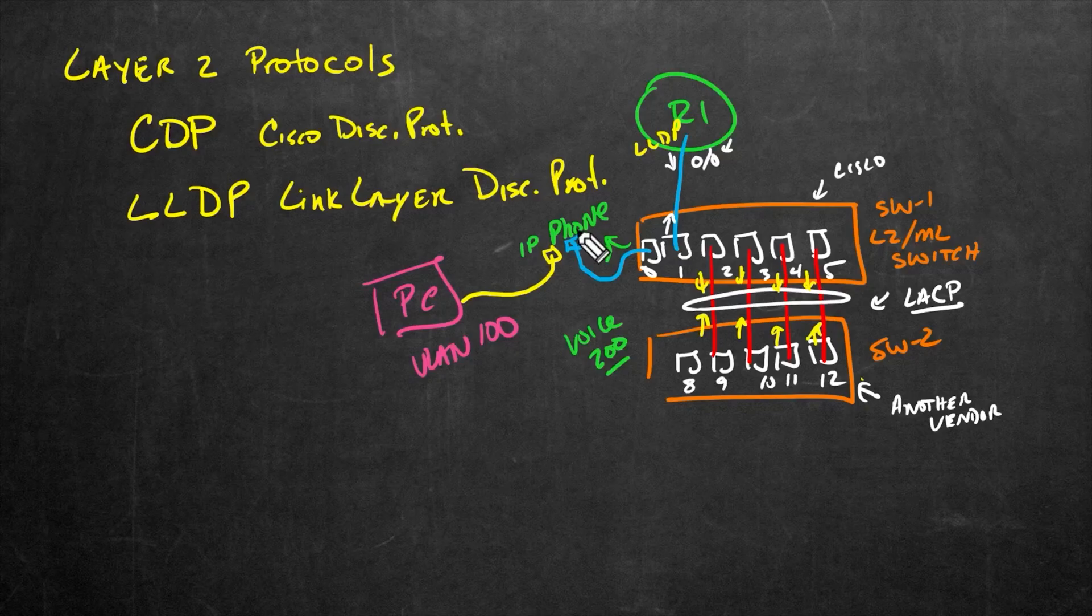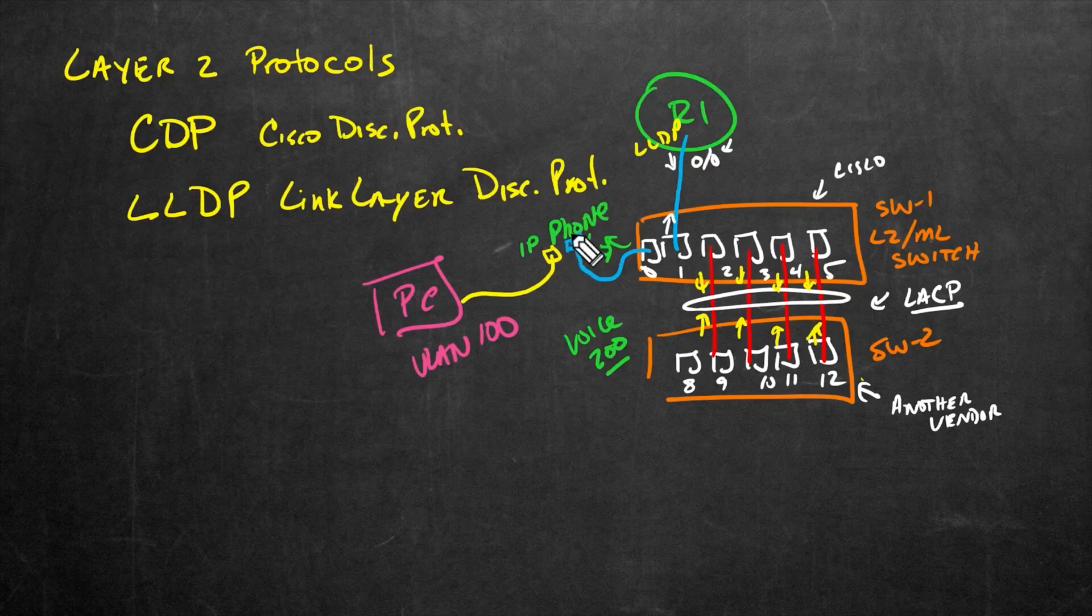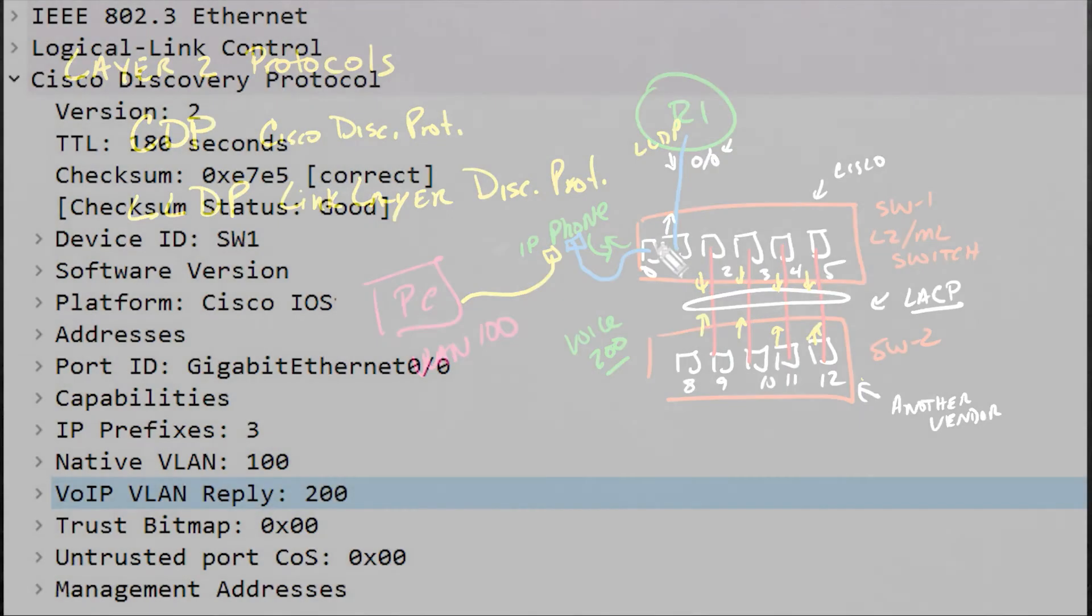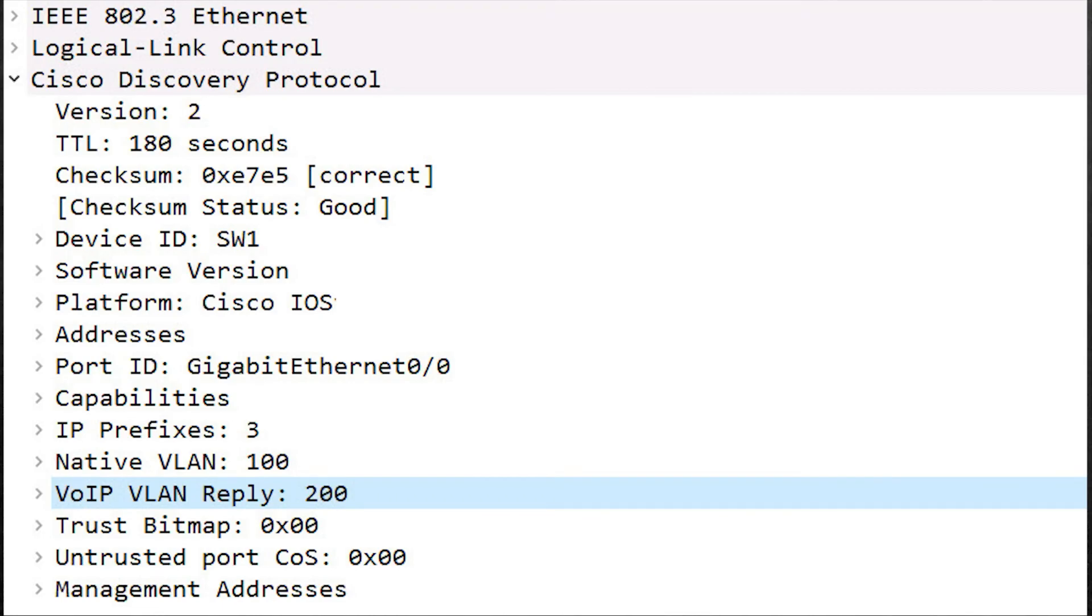So why am I revisiting voice VLANs? We're talking about discovery protocols. Well, if this phone plugs into this port, how does it know what the voice VLAN is? So one of the options we're going to use with this IP phone is to tell it via CDP messages exactly what the voice VLAN is. So on the switch port configuration, it can leverage CDP to communicate that information over to the IP phone. So that's yet an additional benefit of having this layer two discovery protocol: we can have devices like phones discover details and data from the switch at layer two.